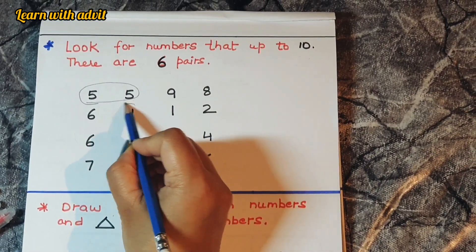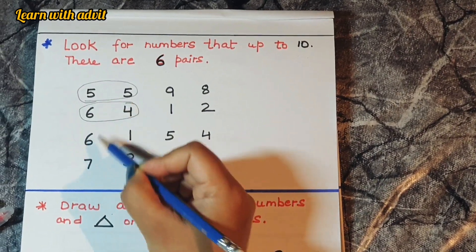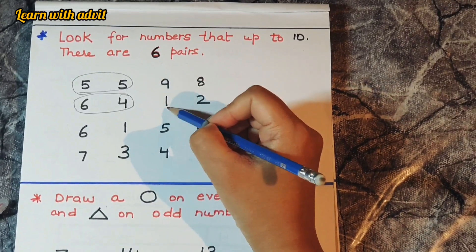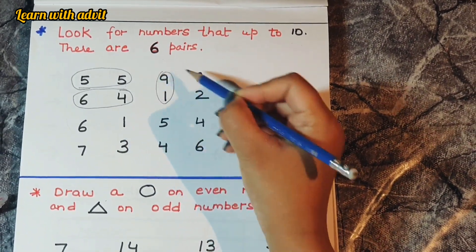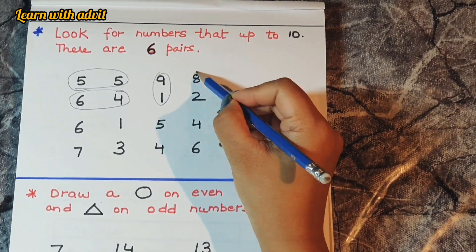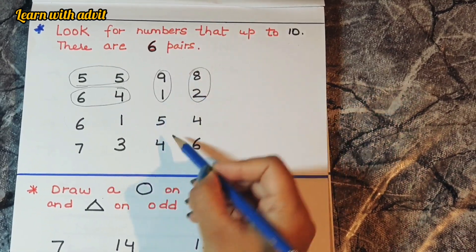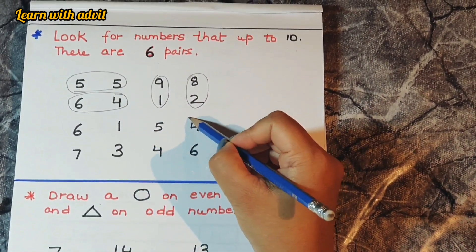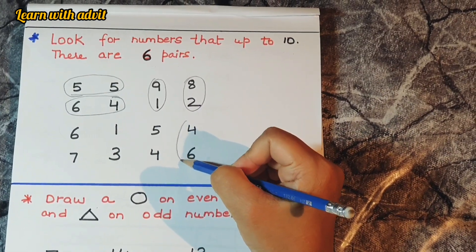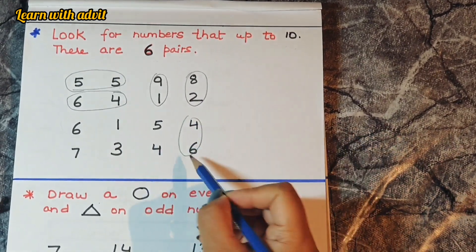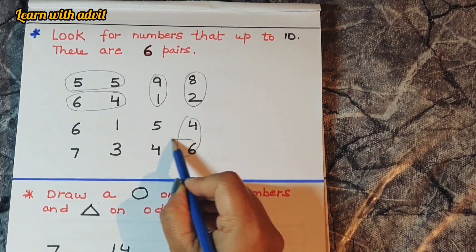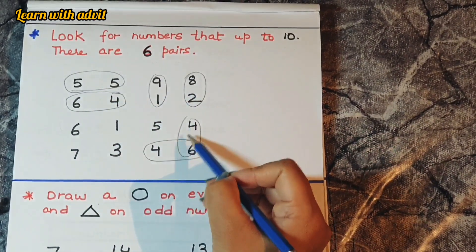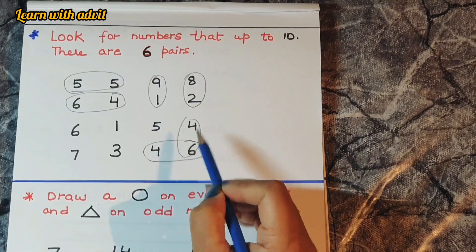Checking further: 6 plus 4 is 10, 9 plus 1 is 10, 8 plus 2 is 10, and again 4 plus 6. So all six pairs are completed. You can give this activity for any target number.